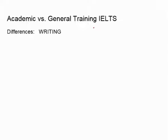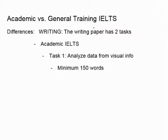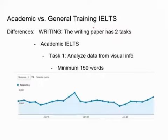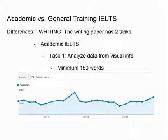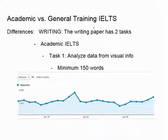Further differences are in the writing section. The writing paper has two tasks for both the academic and the general training IELTS, but the tasks are a little different. In the academic IELTS, your first task is to analyze data from visual information and write a report about what you see — usually a chart or a graph, or maybe two charts and graphs. You need to summarize the important information and provide some analysis of what's important. In our writing section, we will have many examples of these types of questions and how to answer them.